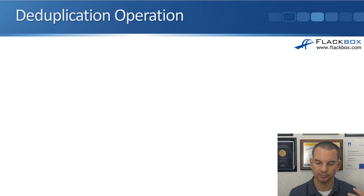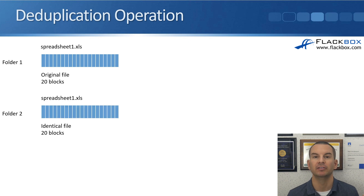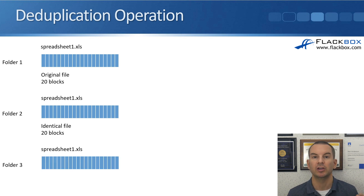Let's walk through a block-level example. The first department's user creates spreadsheet1.xls, which is 20 blocks in size, and gives a copy to someone in another department who saves it in their folder in the same volume. Without deduplication enabled, that would be two copies of the same file — 40 blocks total. Copying it again to a third folder means three times 20 blocks, equaling 60 blocks.